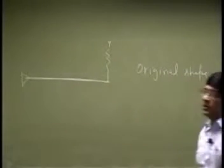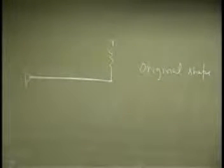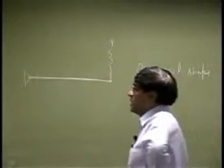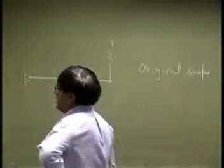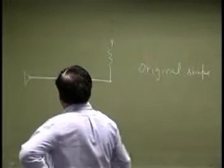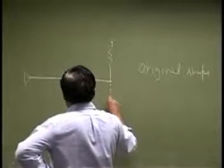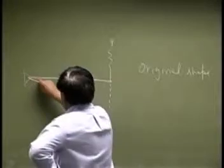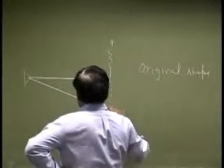And after that, you applied the weight, which is 200 pounds, and then you applied a couple at point A as 100 pound feet. And this thing changed its shape. It came down and the new shape looks like this.